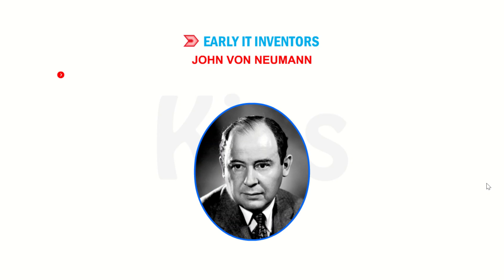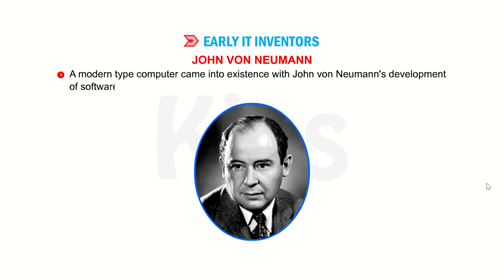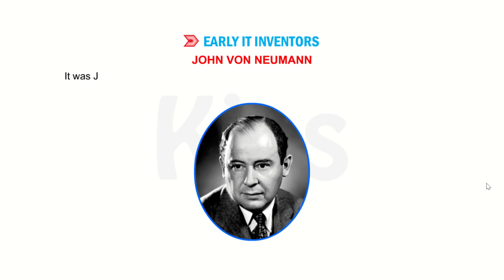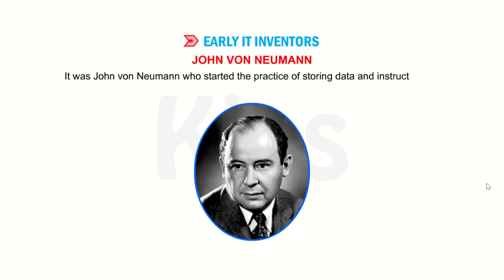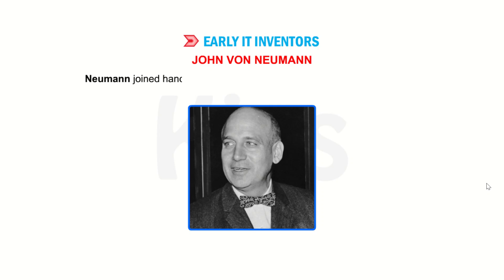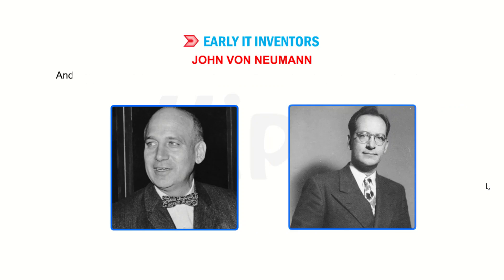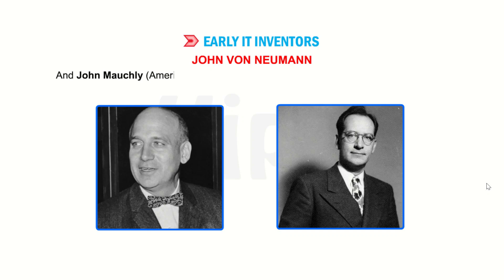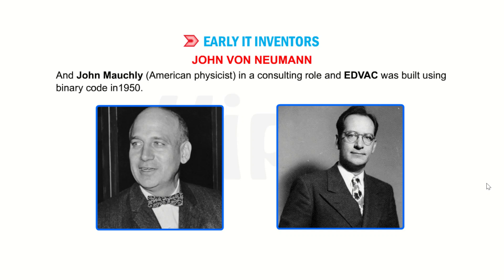John Von Neumann: A modern type computer came into existence with John Von Neumann's development of software written in binary code. It was John Von Neumann who started the practice of storing data and instructions in binary code in memory. Neumann joined hands with Presper Eckert, an American electrical engineer, and John Mauchly, an American physicist, in a consulting role, and EDVAC was built using binary code in 1950.